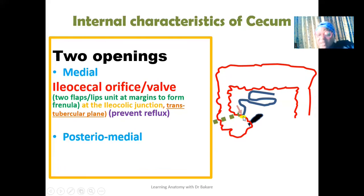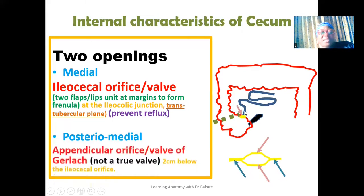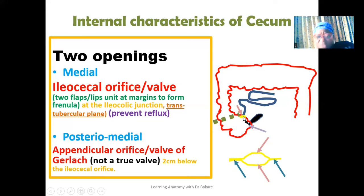If you extract the ileocecal valve, it is made up of two flaps or leaves — a superior leaf and an inferior leaf. The leaves on both sides meet to become the frenulum, and there is one frenulum on each side. This configuration helps prevent the backflow or reflux of food particles back into the small intestine. At the posterior medial side, we have the appendicular orifice, guided by the valve of Gerlach. This is not a true valve and is seen about two centimeters from the opening of the ileum. Both orifices are seen at the medial side of the cecum — one more anteriorly and one more posteriorly — and the distance between the two openings is about two centimeters.